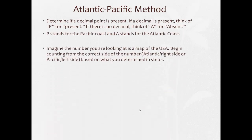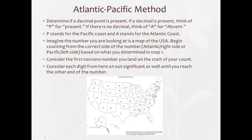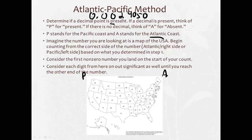Here's the Atlantic-Pacific method — a helpful shortcut. First, determine if a decimal point is present. If the decimal is present, start from the Pacific side (the left). If the decimal is absent, use the Atlantic side (the right). Imagine the number like a map of the U.S. For example, with 0.0024050: a decimal is present, so we start from the Pacific (left) side, skip zeros until the first non-zero digit, then count everything to the end — giving 5 significant figures.